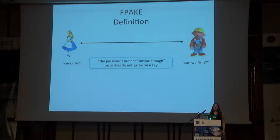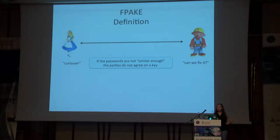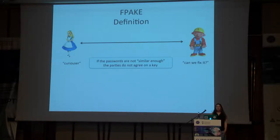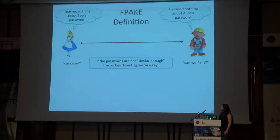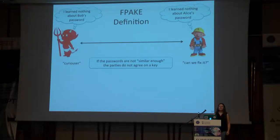If the two of them don't have passwords that are similar — say Alice's password is 'curiouser' and Bob's is 'can we fix it' — they shouldn't end up agreeing on a secret key, and neither of them should learn anything at all about the other's password. This should hold even if one of them is malicious and doesn't follow the protocol.